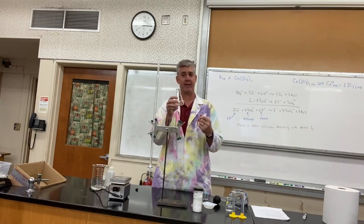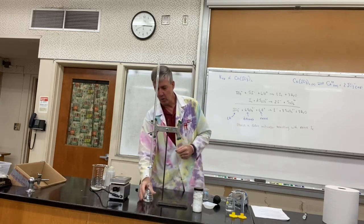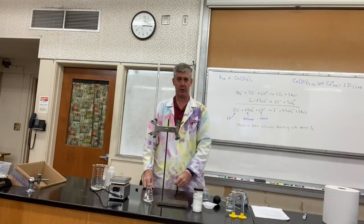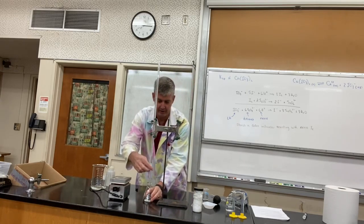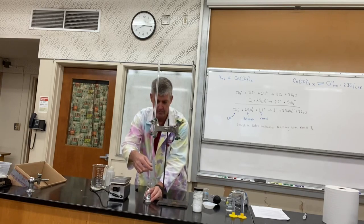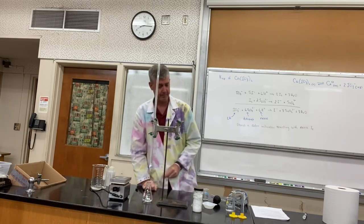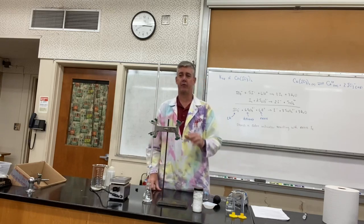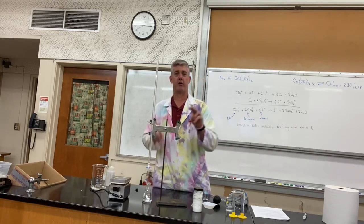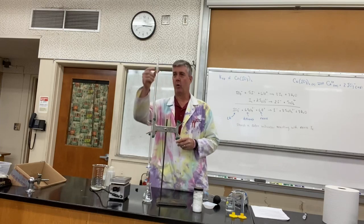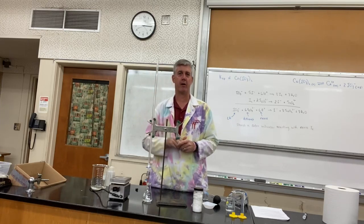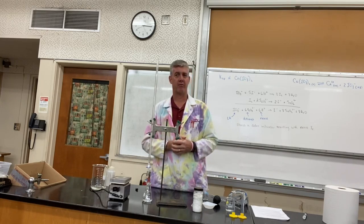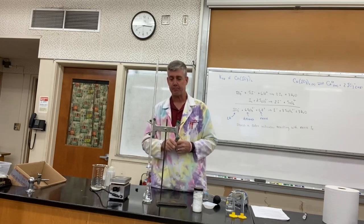Once we get our flask all prepped up and we have all of those reactants in our flask, if you want, you can use a stir plate and get that stir bar going. You want to make sure it's a really slow stir. We don't want a tornado, we don't want any splashing or splattering. That's one reason why we like to do titrations in flasks that have a narrow neck and not a beaker. In case there is any splattering, it's going to stay inside the flask.